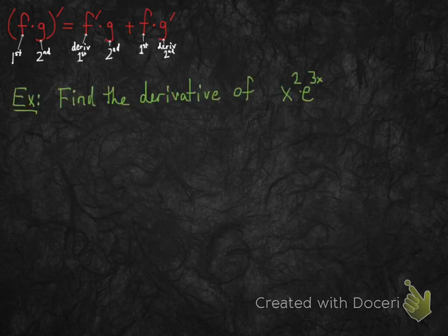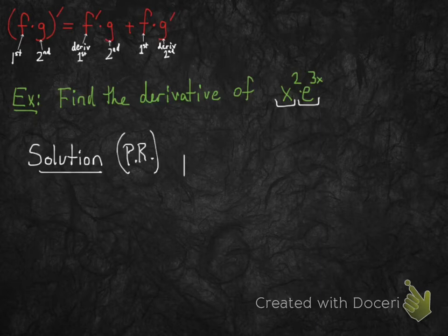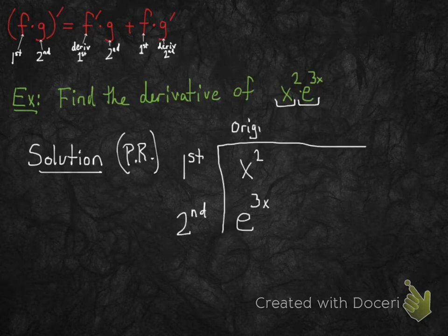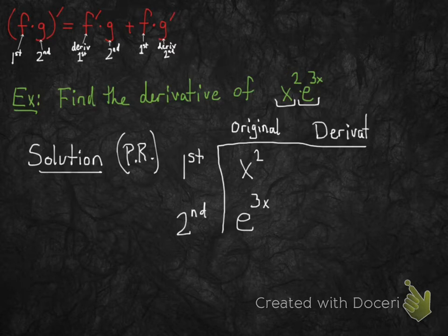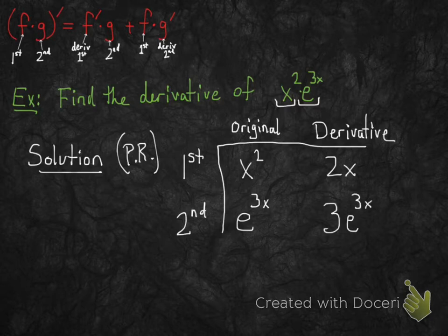Let's use the product rule to find the derivative of x squared times e to the 3x. We're going to use the product rule because we have two functions multiplied together. I'm going to write down what those two functions are in a little table, and in the next column I'm going to write their derivatives. Derivative of x squared is 2x, and derivative of e to the 3x is 3e to the 3x.